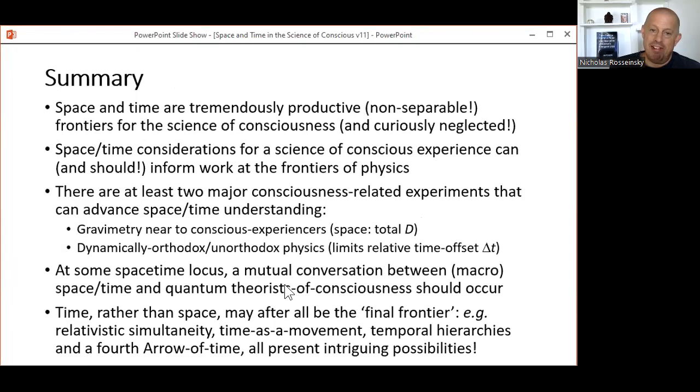So in final summary, space and time are tremendously productive, non-separable frontiers of the science of consciousness and curiously neglected. Space-time considerations for science of conscious experience can and should inform work at the frontiers of physics. There are at least two major consciousness-related experiments that can advance space-time understanding: gravimetry near to conscious experiences, which could provide novel data about total dimensionality, primarily spatial; and the dynamically orthodox-unorthodox physics program, again potentially limiting relative time offset delta-T of experience relative to brain activity.